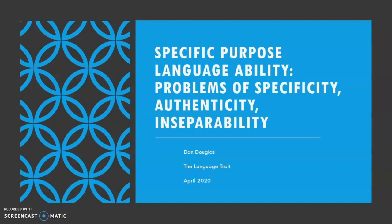Authenticity: how do we describe the relationship between the test and non-test situations in terms of test method characteristics? And inseparability: what is the relationship between language knowledge and specific purpose background knowledge?